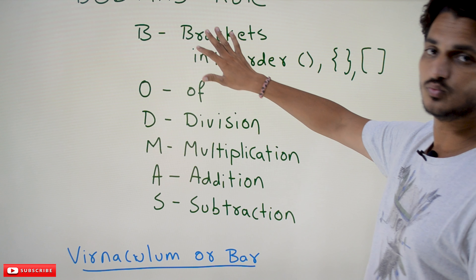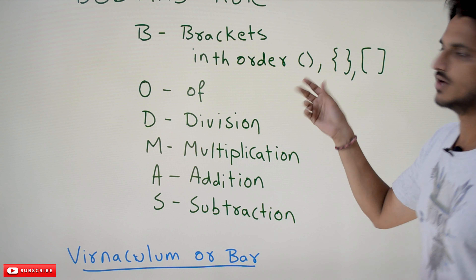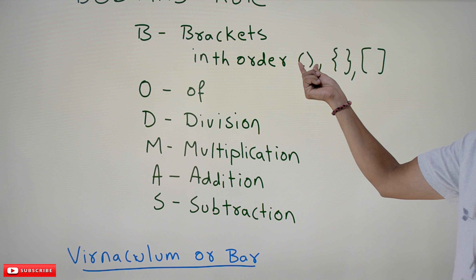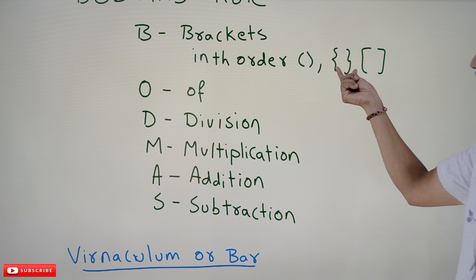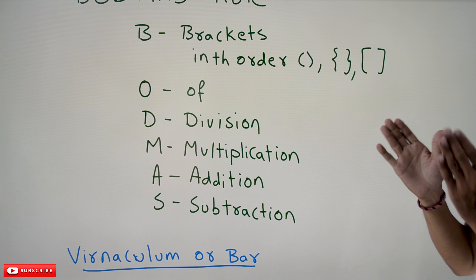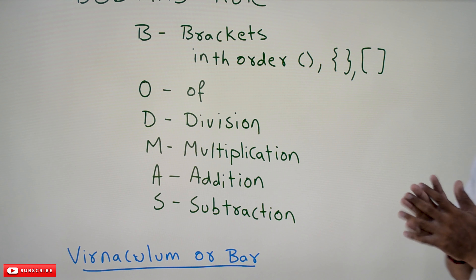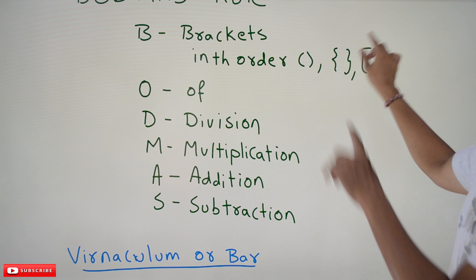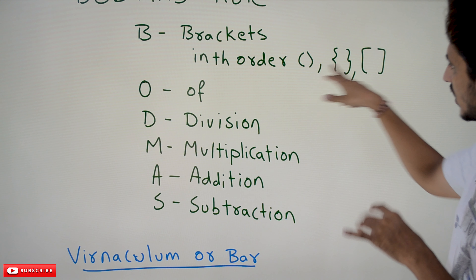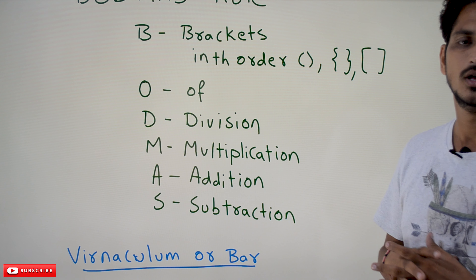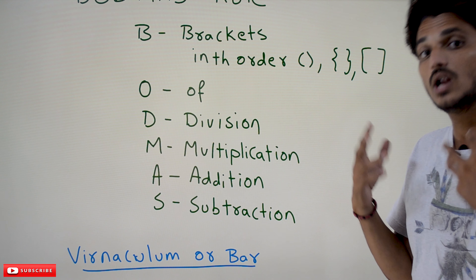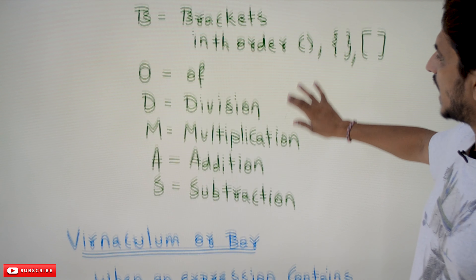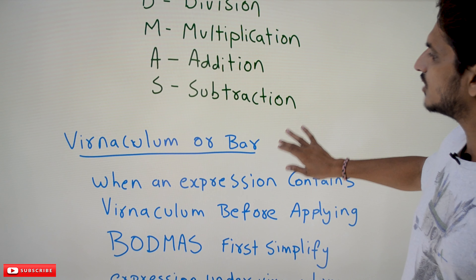For brackets, we have to follow a sequence. First, the expressions present in the round brackets should be evaluated. After that we go with the curly brackets (flower brackets). After that we go with the square brackets. This is the order you have to follow. You will get good clarity with examples, which we will discuss next.